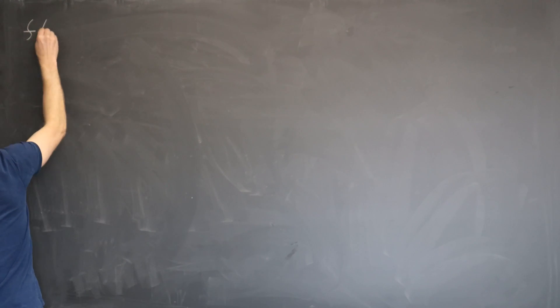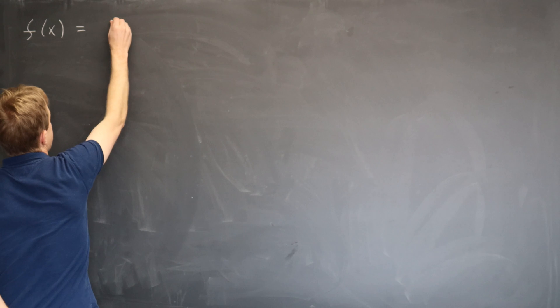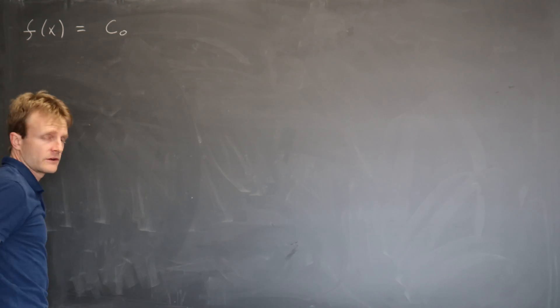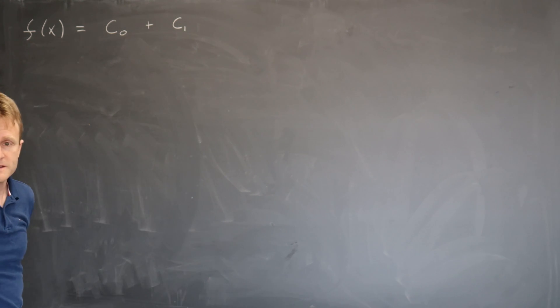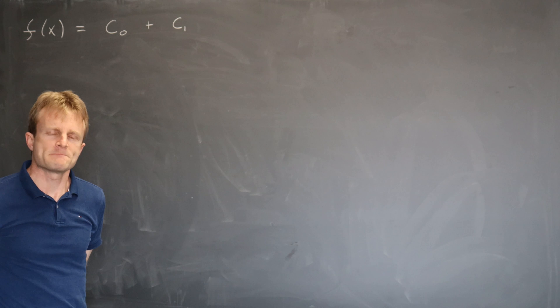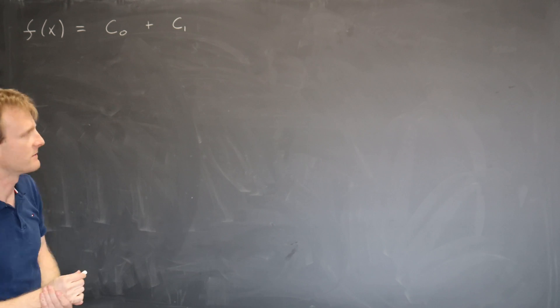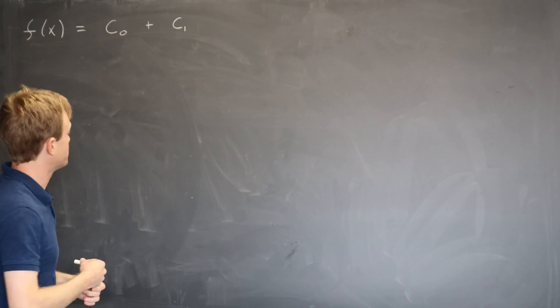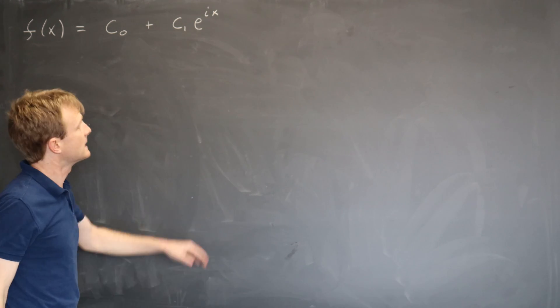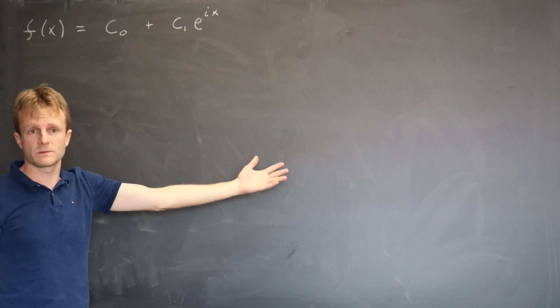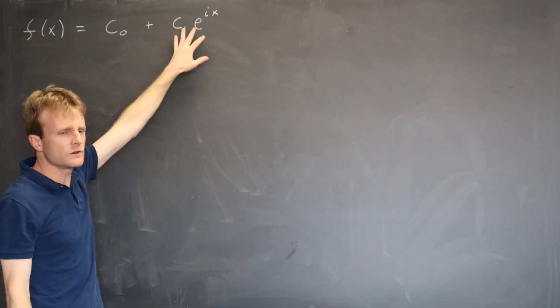So let's first imagine we just have some general function f of x. And we're going to write that general function as a sum with some constant term that we'll call c0, some term c1. And I'm not going to use the sine and the cosine yet. If you use sines and cosines, you get a whole bunch of different formulas that you have to memorize or look up every time you use one. And the structure isn't as clear.